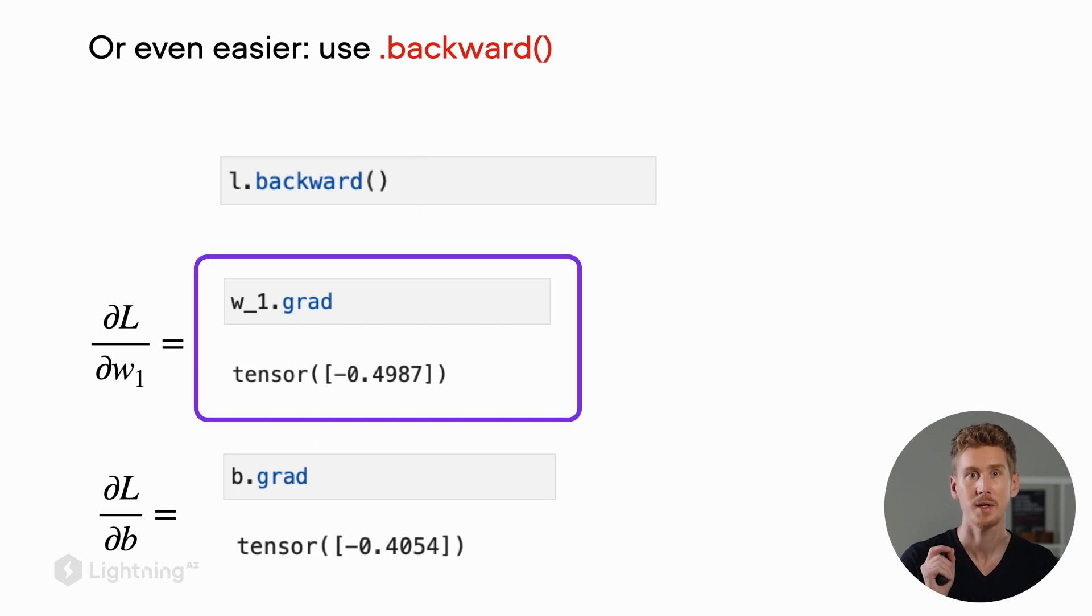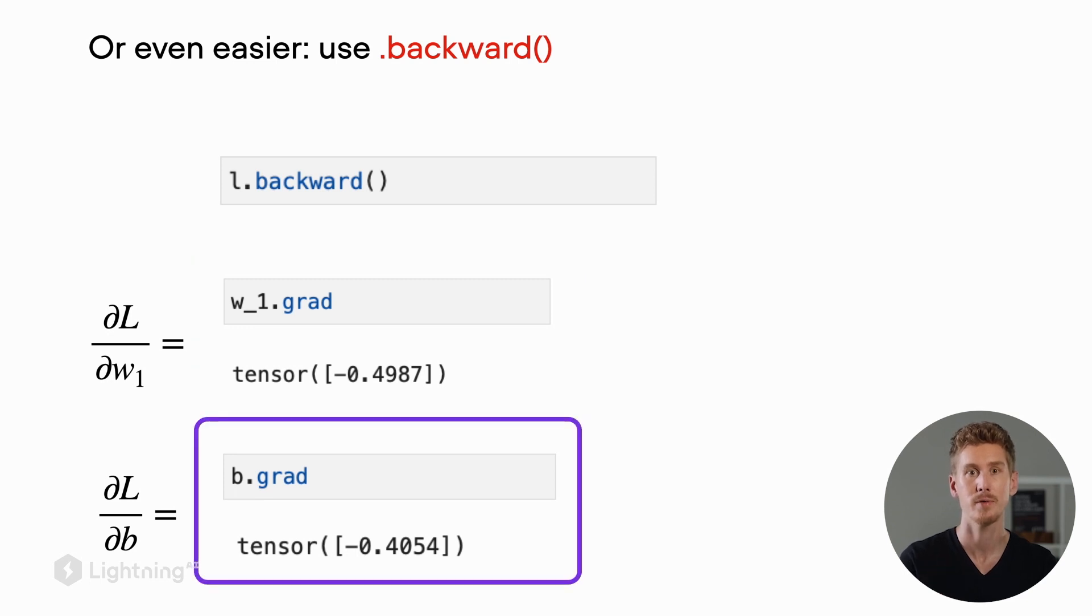Now, if we check w1.grad, we can see that we actually have the partial derivative of the loss with respect to w1 without having to call the grad function. The same here is true also for the bias. .backward is a convenient way of computing the gradients without us having to call the grad function manually.